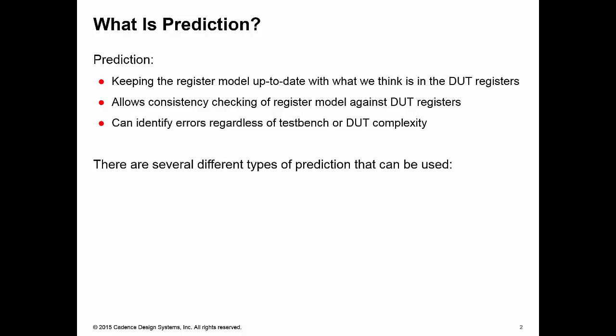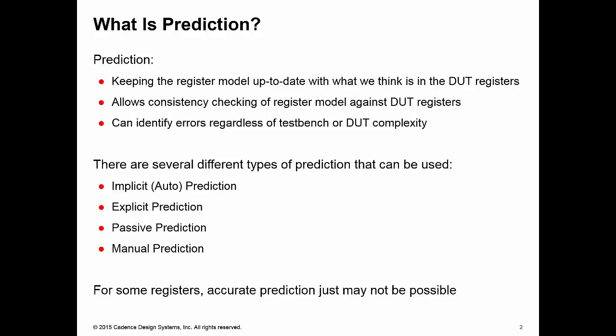In this presentation, we're going to have a look at four different prediction modes: implicit, explicit, passive and manual. But you may have to accept that for some registers, prediction just may not be possible. We may not be able to keep an accurate expected value in a register model for a given register. Therefore, for some registers, consistency checking just may not be possible.